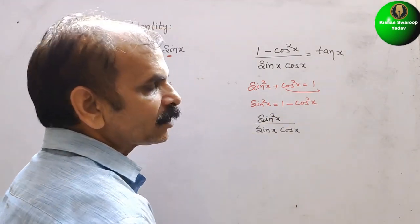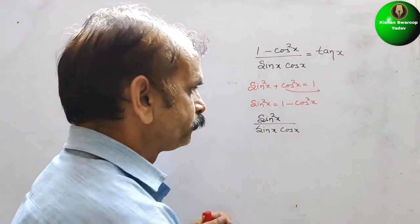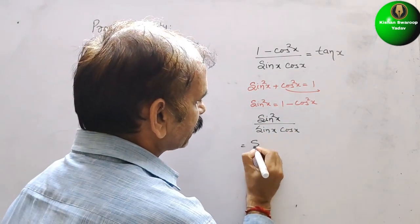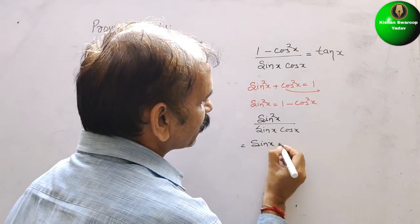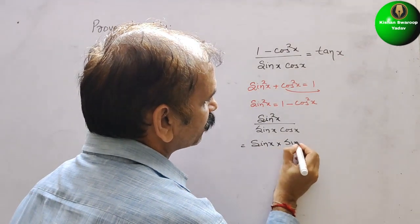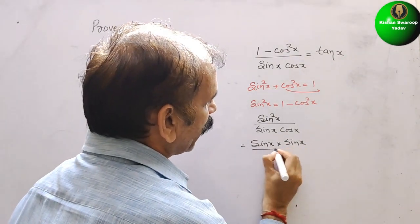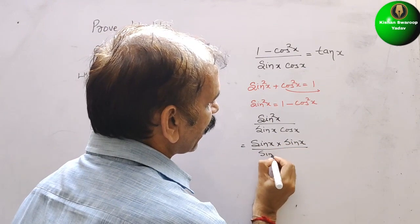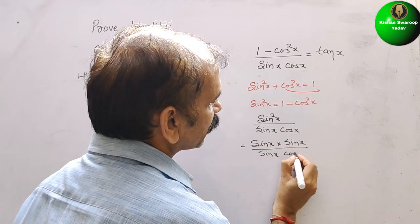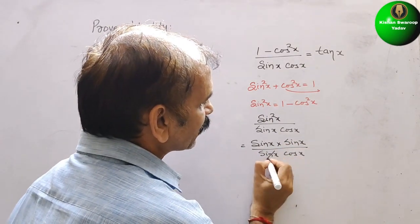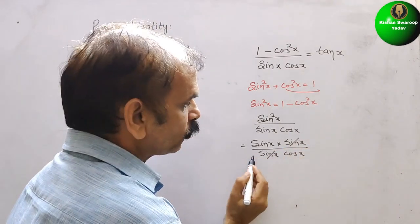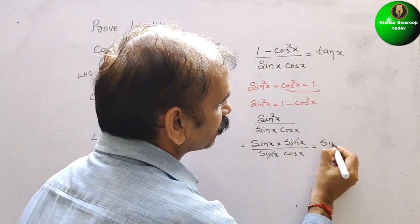Sin square x means that is sin x times sin x. So we can write sin x into sin x by sin x cos x. So sin x and sin x cancel. Now it will be sin x by cos x.